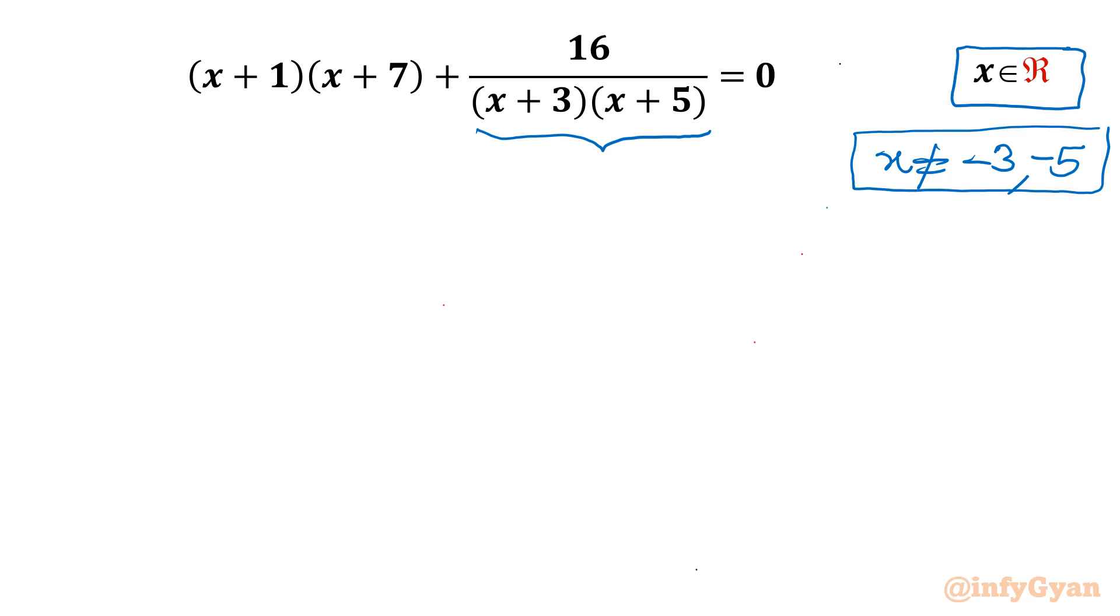Now I will multiply this equation with x plus 3 times x plus 5. See what will happen once you will multiply, x plus 1 times x plus 7 times x plus 3 times x plus 5 plus 16 equal to 0.